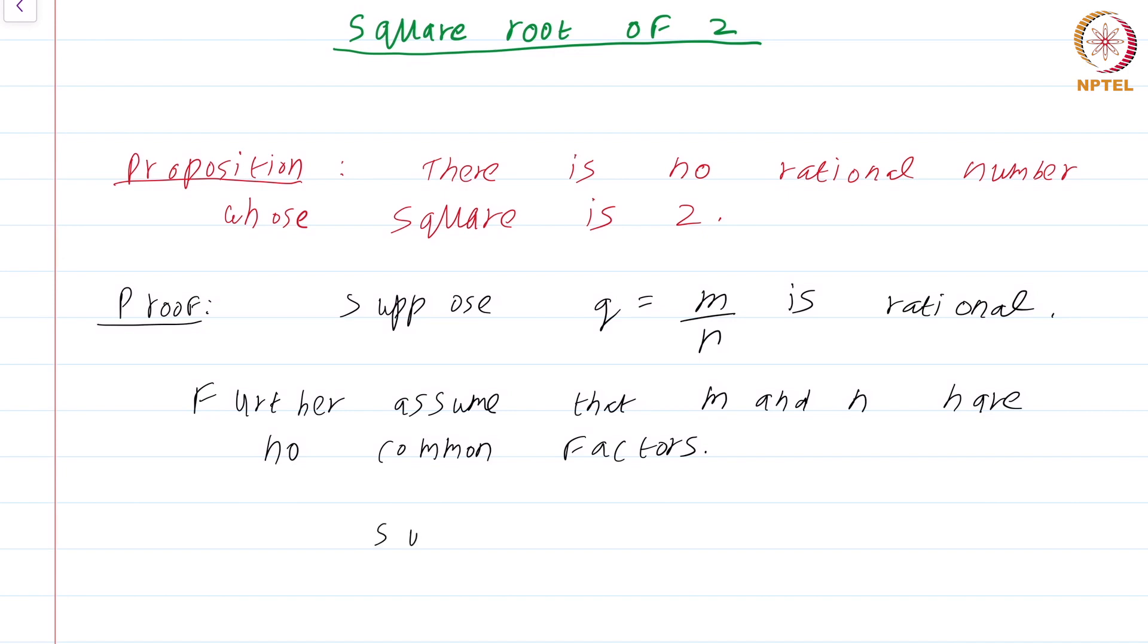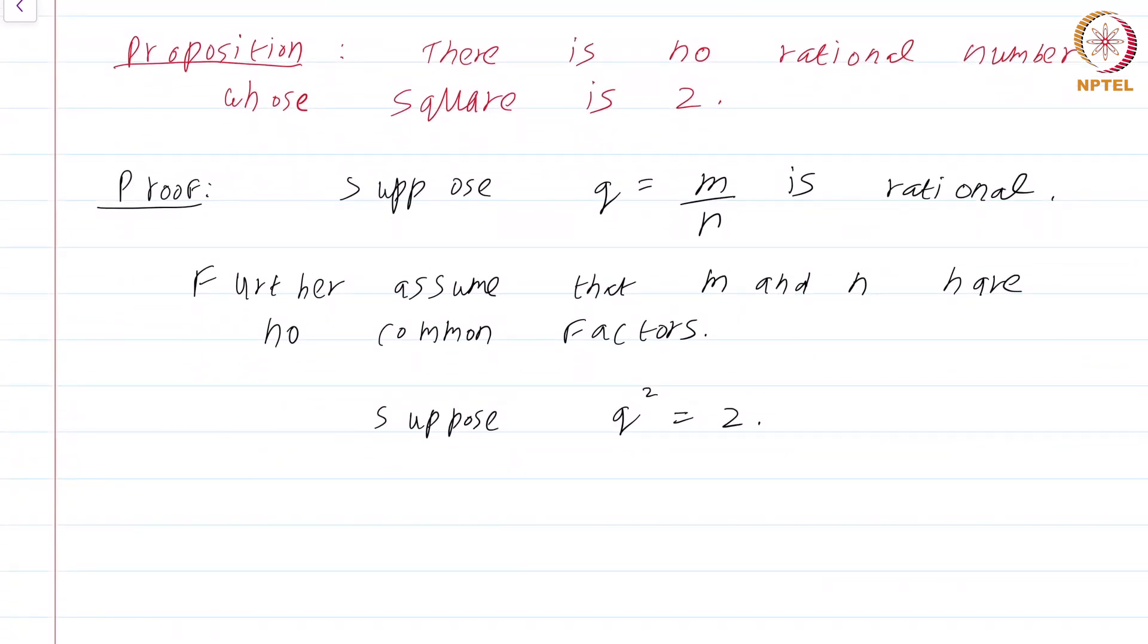Now, suppose q² = 2. This is going to be a proof by contradiction. I am going to assume that the result is false and that there is a rational number whose square is 2, and somehow arrive at a contradiction.